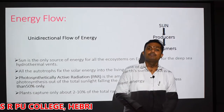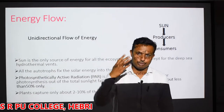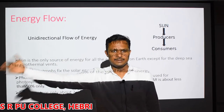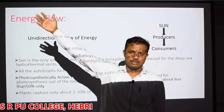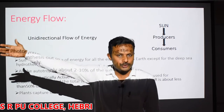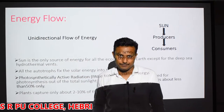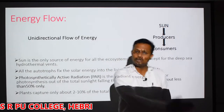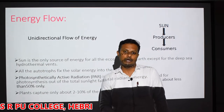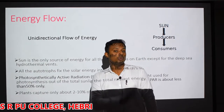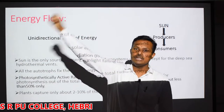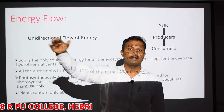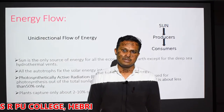If you consider a simple grazing food chain - grass, grasshopper, frog, snake, eagle - with the eagle at the topmost position, can you expect the energy flowing back from eagle to grass? Definitely not, it is not going to happen. Energy flows only in one direction, from grass to eagle step by step, crossing through all organisms occupying different levels. This is what we mean by unidirectional flow of energy.